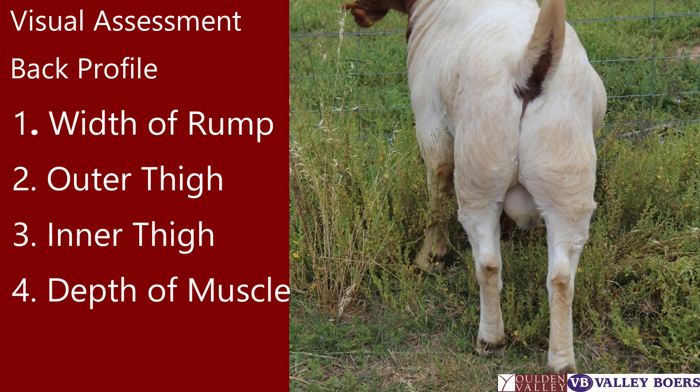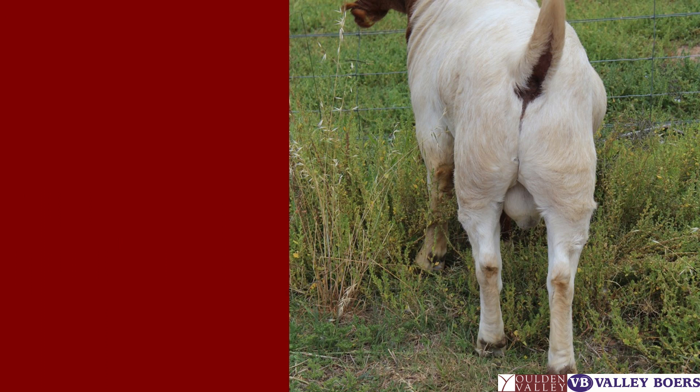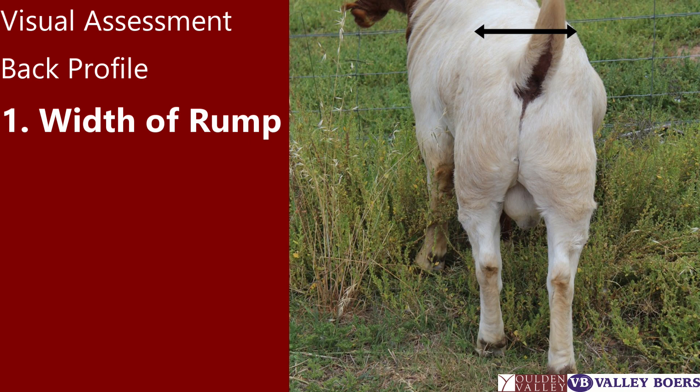When looking from behind the goat we look at the width of rump, the outer and inner thigh, and the depth of muscle. You should be able to see the width of the rump — we are looking for a nice full rump that doesn't fall away to the sides.